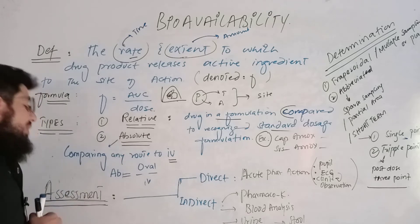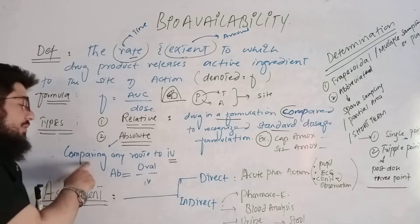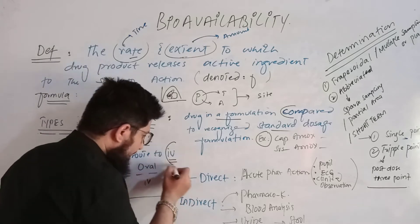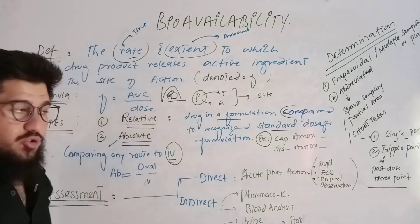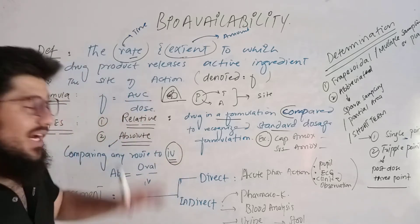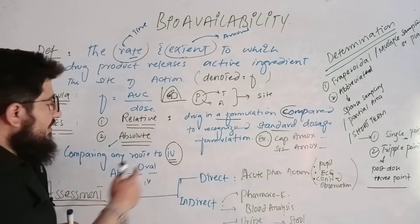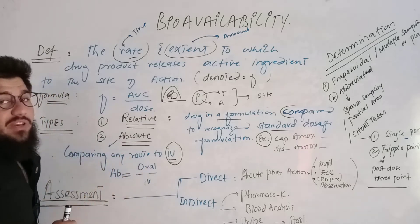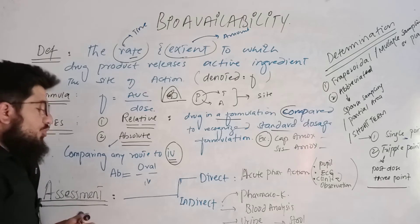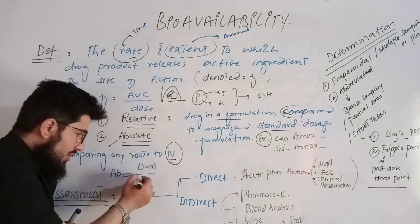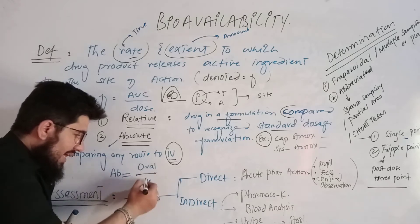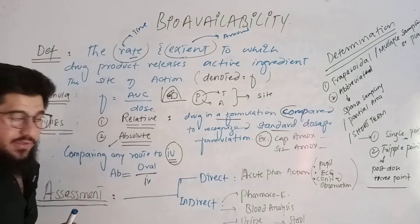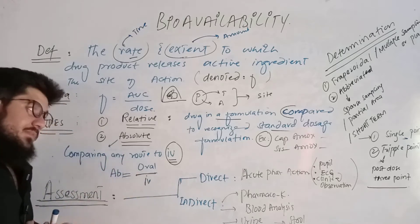For absolute bioavailability, we compare any route of administration with the IV route. So when we compare any other route — for example, oral — with the IV route, the result is called absolute bioavailability. Such a comparison gives us absolute bioavailability.